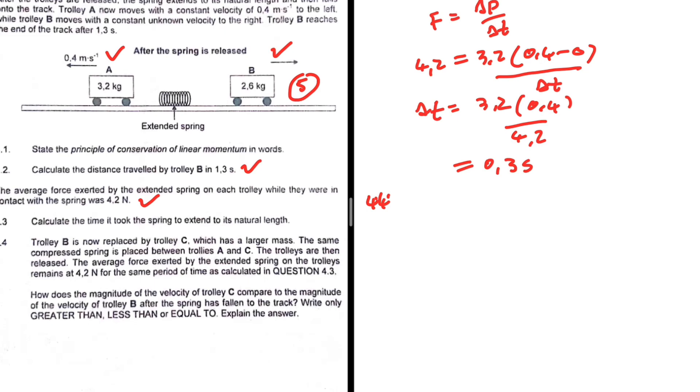The same compressed spring is placed between trolley A and C. The trolleys are then released. The average force exerted by the extended spring on the trolley remains at 4.2 newtons for the same period of time as calculated above. How does the magnitude of the velocity of trolley C compare to that of trolley B after the—magnitude of the velocity, that is, after the spring has fallen to the track, right? Only greater than, less than, or equal to?